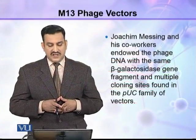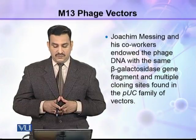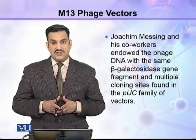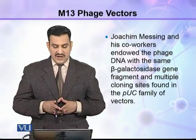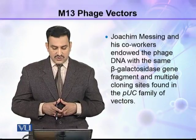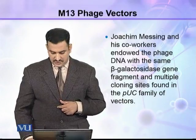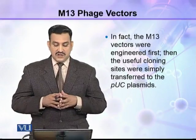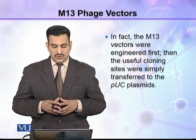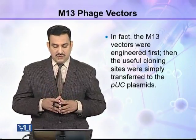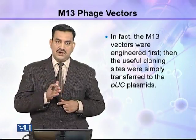Joakim Messing and his co-workers endowed the phage DNA with the same beta-galactosidase gene fragment and multiple cloning sites found in the PUC family of vectors. In fact, the M13 vectors were engineered first, then the useful cloning sites were simply transferred to the PUC plasmids.